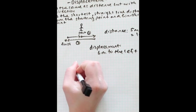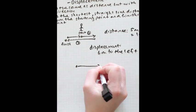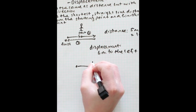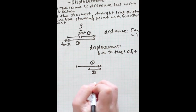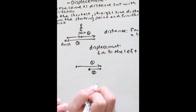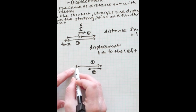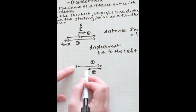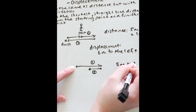Let's look at another example. Let's say a person starts walking here, then walks to this point in the first step. In the second step, they walk back to here. So in this case, since they're finishing here, the displacement is just going to be the difference between start and finish — they started here and finished here. So the displacement is going to be five meters to the right.